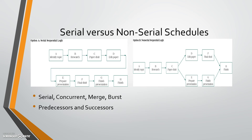There are basically two types of schedules — there are a lot of variations, but to keep it simple. First, there's a serial sequential logic model. Basically it says A must be done before B, B before C, and C before D, and so on all the way until the end of the project.